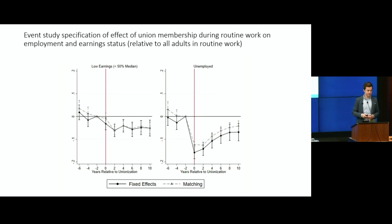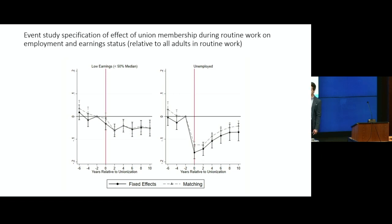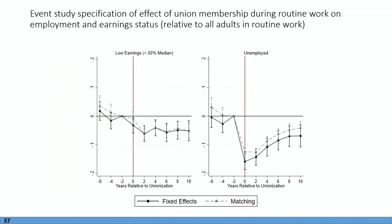Using an event study specification framework, looking at the effect of union membership during routine work on employment and earnings relative to all other adults in routine work: before unionization, the treatment group didn't have a different likelihood of having low earnings or being unemployed. But after unionization, there are clear negative effects on both outcomes, consistent with everything shown in the prior slides.